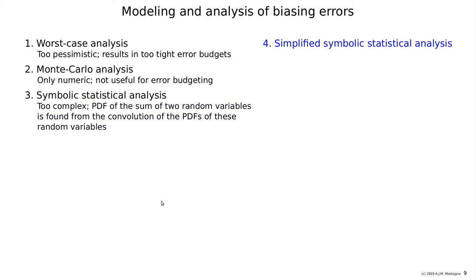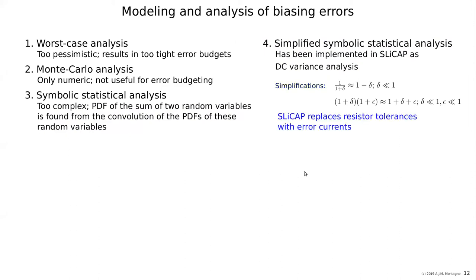And that is simplified symbolic statistical analysis, as I have implemented this in Slicap as DC variance analysis. The simplification is as follows. Error 1 over 1 plus delta is considered as 1 minus delta, if delta is much smaller than 1, and 1 plus delta times 1 plus epsilon, in which delta and epsilon are both errors, then the product term is ignored. It's just 1 plus delta plus epsilon. So first order approximation for all errors and no combined things. And then we replace in Slicap resistor tolerances with error currents. That is basically the method behind it, just as it was a noise current. We introduce an error current that models the error of the resistor.